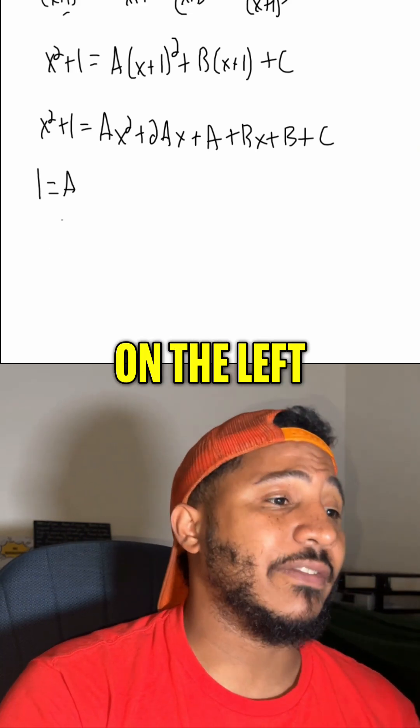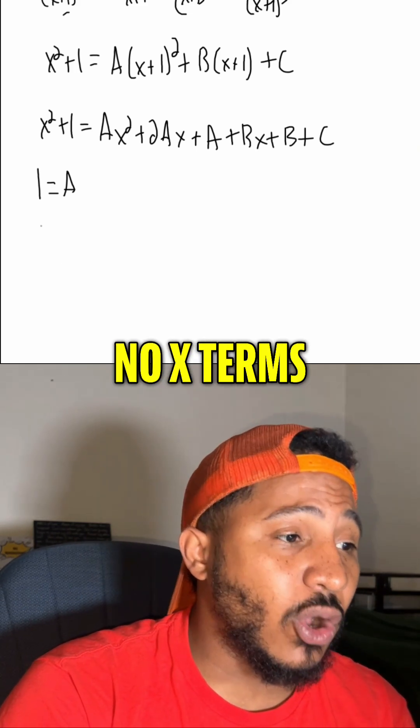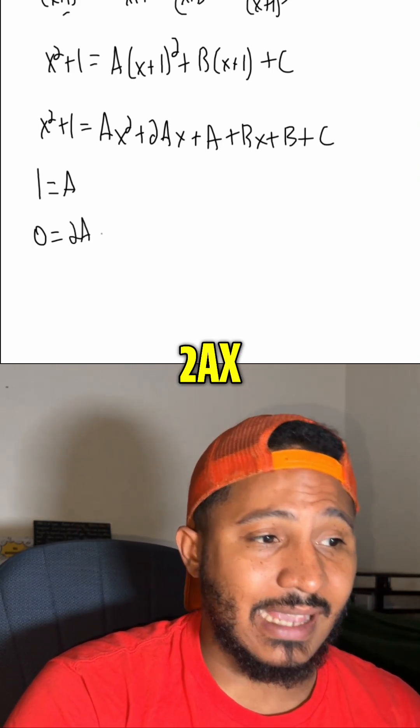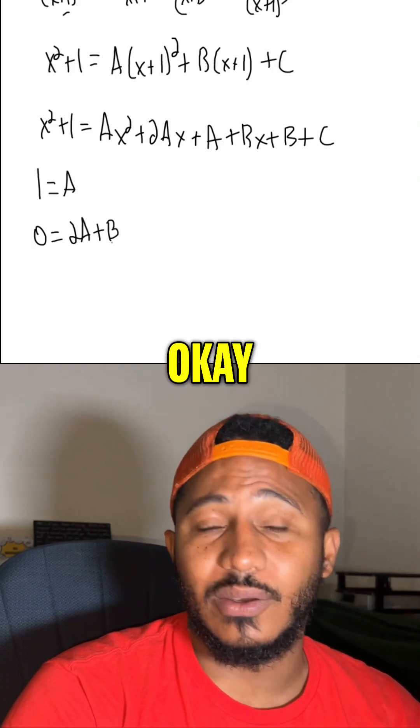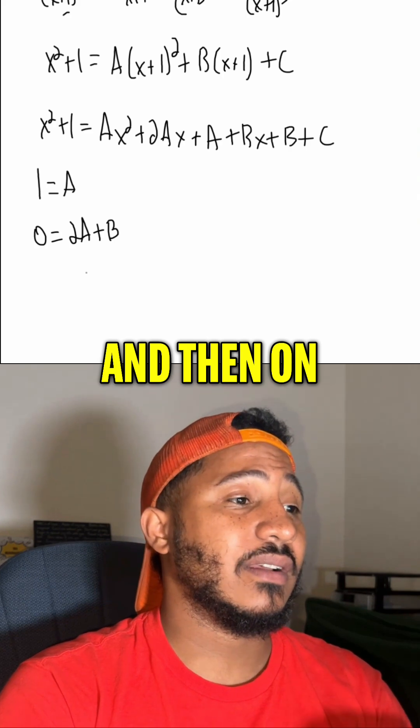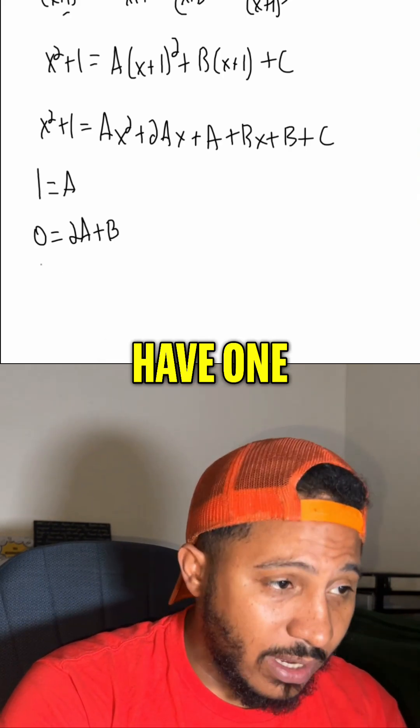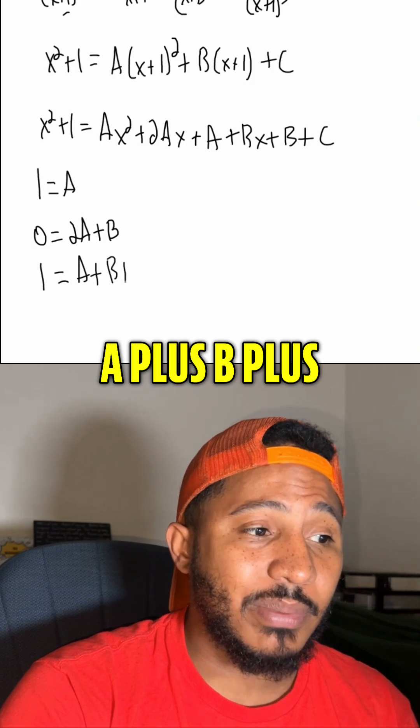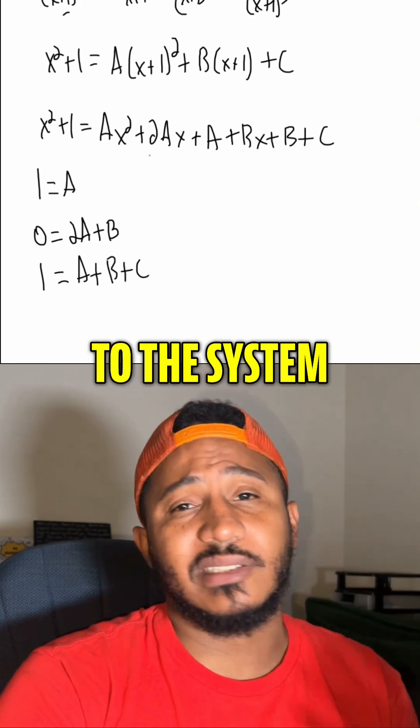We also know that on the left-hand side, the x terms, we have no x terms on the left-hand side. But on the right-hand side, we have a 2ax and then also plus a b. And then on the left-hand side, we have 1 as the constant. On the right-hand side, we have three constants, a plus b plus c. And so, three equations, three variables, this is a system. Let's solve it.